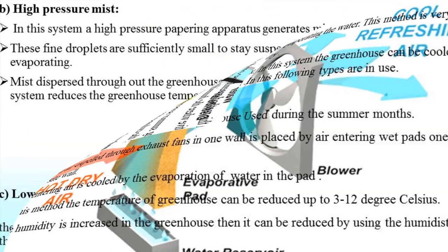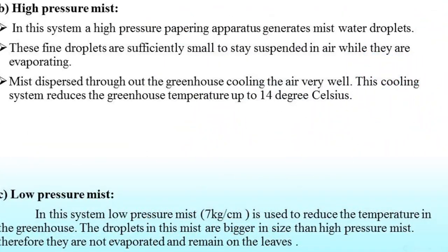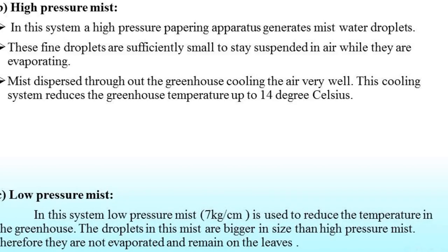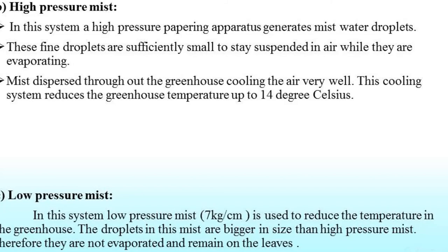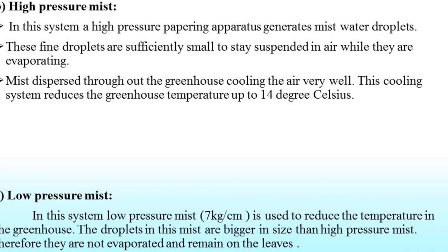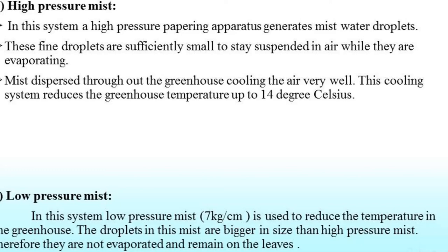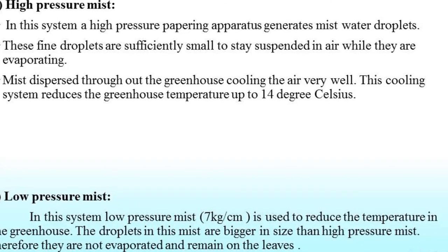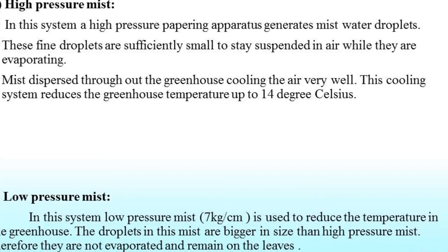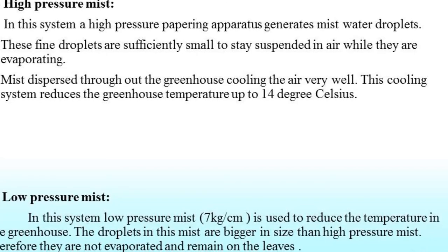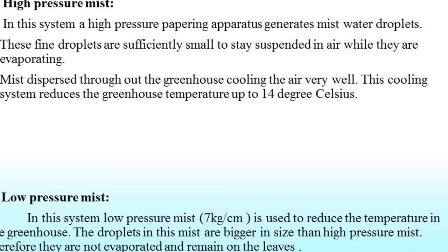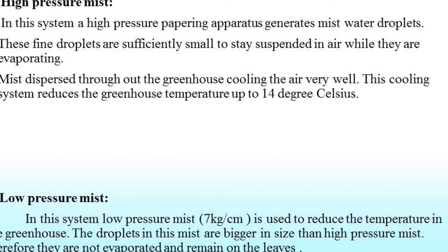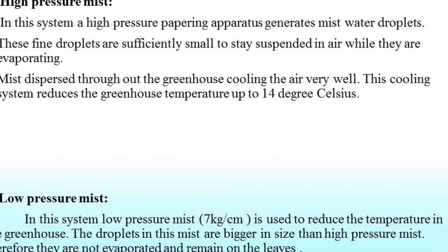The second evaporative method is high pressure mist. In this system, a high pressure apparatus generates fine mist water droplets. These fine droplets are sufficiently small and stay suspended in the air while they are evaporating. The mist droplets are dispersed throughout the greenhouse and cool the air very effectively. This cooling system reduces greenhouse temperature up to 14 degrees Celsius.